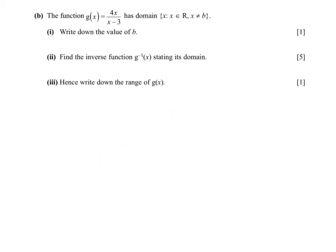So we have our function and we're told that x cannot equal b. Then we're asked to write down the value of b. Well, any time we have a fraction, the first thing that we should know is that a fraction cannot have 0 as the denominator. So x minus 3 cannot equal 0, which means that x cannot equal 3. So b must be 3.